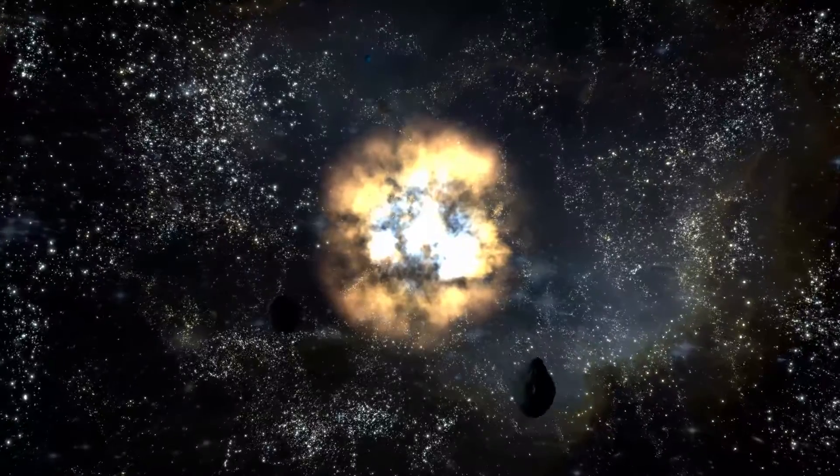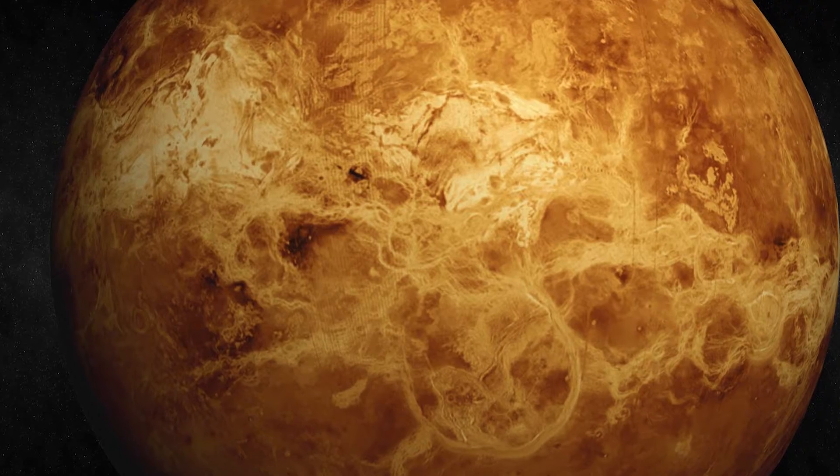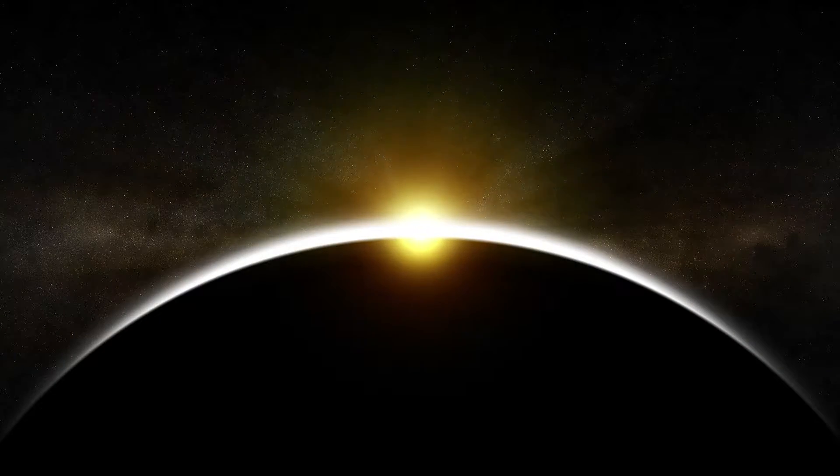As you may recall from one of our prior videos, Venus, for example, spins in the opposite direction, therefore the Sun rises in the west and sets in the east.